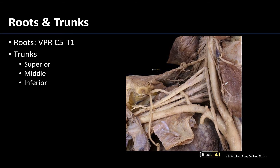The most proximal portion of the brachial plexus are the roots. These are ventral primary rami of spinal nerves C5 through T1. These ventral primary rami have both motor and sensory fibers, and you have to go all the way back to the neck to locate these — near our old friends the common carotid artery and the vagus nerve.